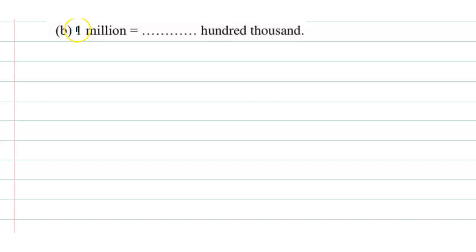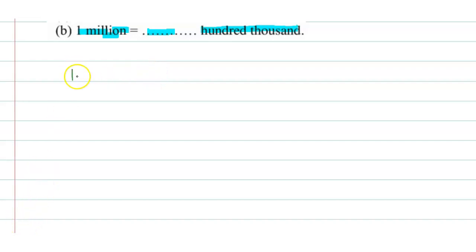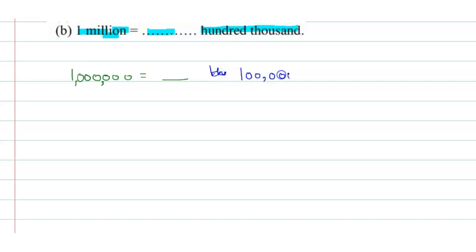Hello to everyone. Today's question is: 1 million is equal to dash 100,000. First we will write 1 million — 1 million has 6 zeros. Now, how many hundred thousands equal 1 million? 100,000 is 100,000.